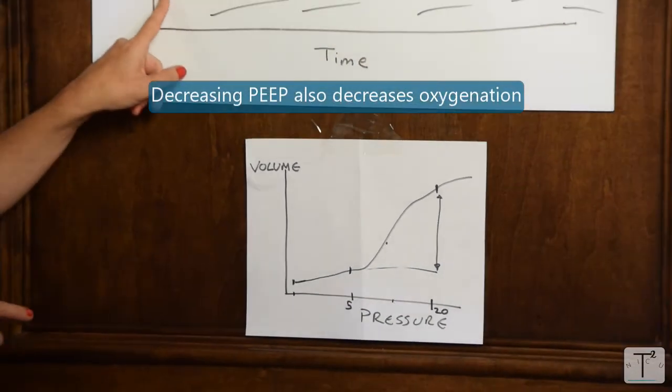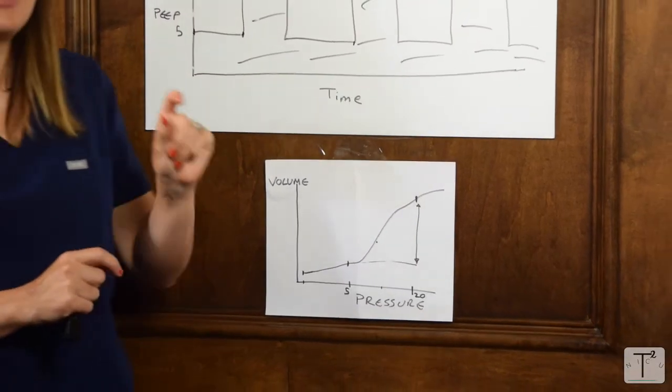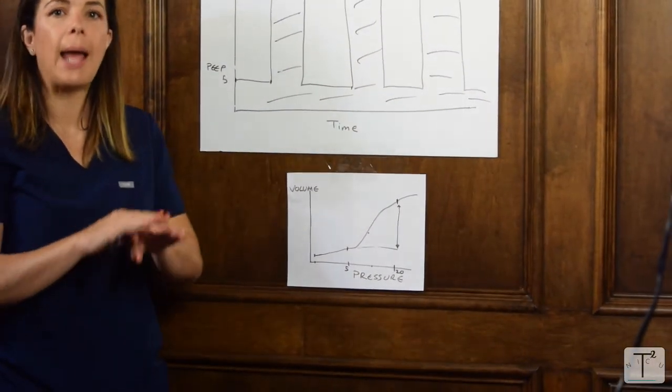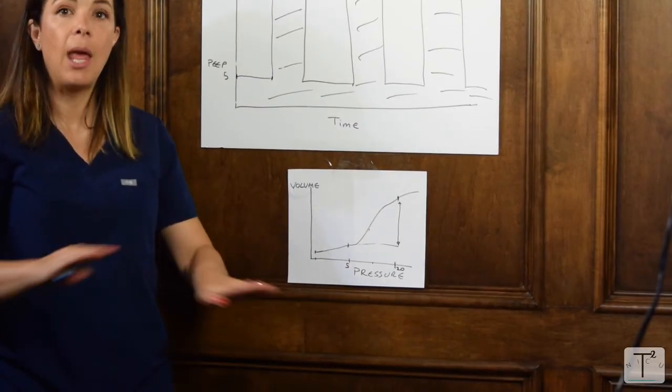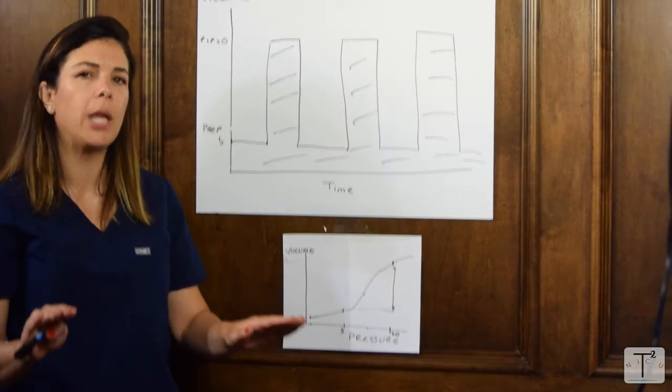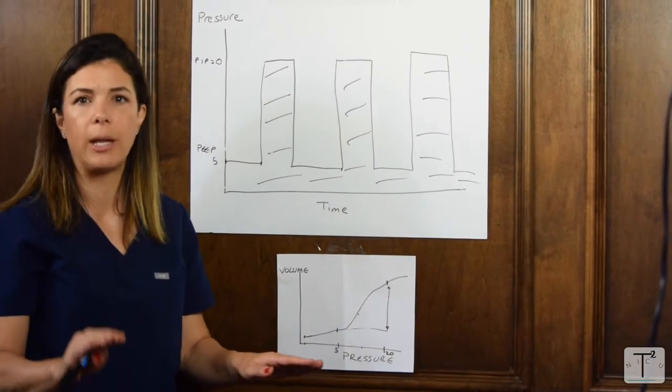Generally, we do not change the PEEP. We decide how much pressure the baby needs at the end of its expiration to make sure that those alveoli don't collapse. Generally, we'll keep it about the same, whether it's 5 or 6 or 7.